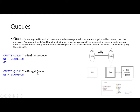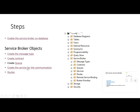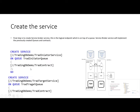Here we need the queue. I have created two queues for the two services. After creating the queue, the last step is to create the services. A service is the logical endpoint which sits on top of the queue. When creating the service, we implement the queue and the contracts. We have to create the service on both ends — for the initiator and the target. On the initiator I am going to create the service with the name 'Trading Initiator Service', implementing the initiator queue and the contracts.